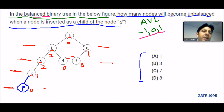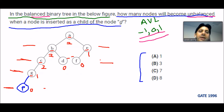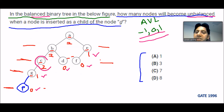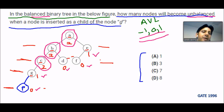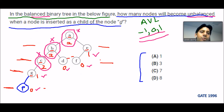Now, any node not following the balancing factor criteria of -1, 0, or 1 is unbalanced. Node G (factor 1), node E (factor 1) — these are fulfilling the criteria. Node C with balancing factor 2 is not fulfilling the criteria. Node B with balancing factor 2 is also not fulfilling the criteria. Node A with balancing factor 2 is also not fulfilling the criteria. So these three nodes — C, B, and A — are unbalanced, making 3 the correct answer. The correct option is B.